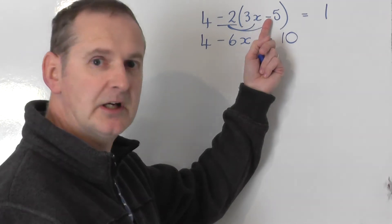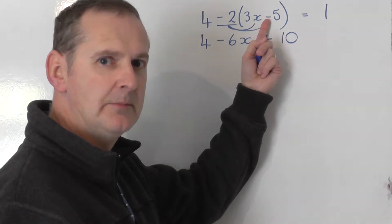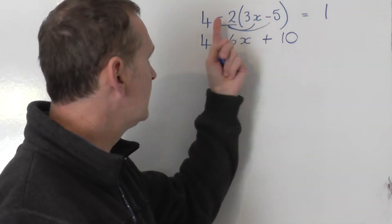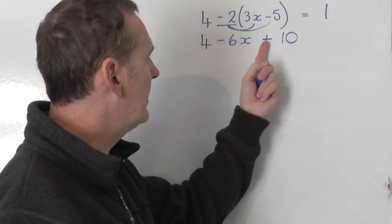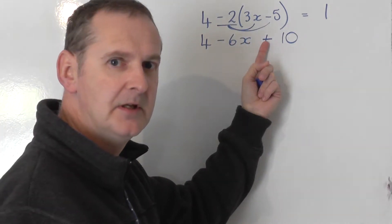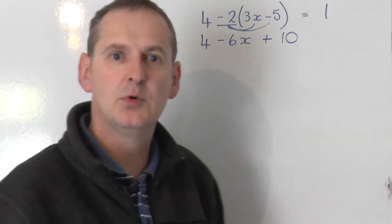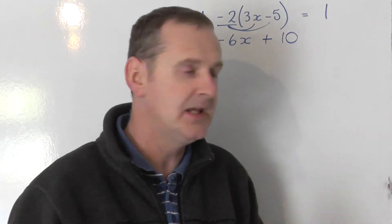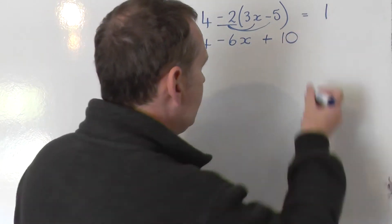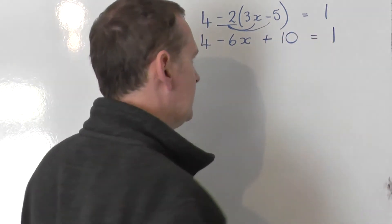So notice that inside the bracket we had a negative, but when you expand it out, because there's a negative in front of the bracket, you actually get a positive there. So don't automatically assume there's a minus in the bracket, you get a minus there, because it doesn't always work like that. So the right hand side equals 1. Well that doesn't change, so leave that alone.